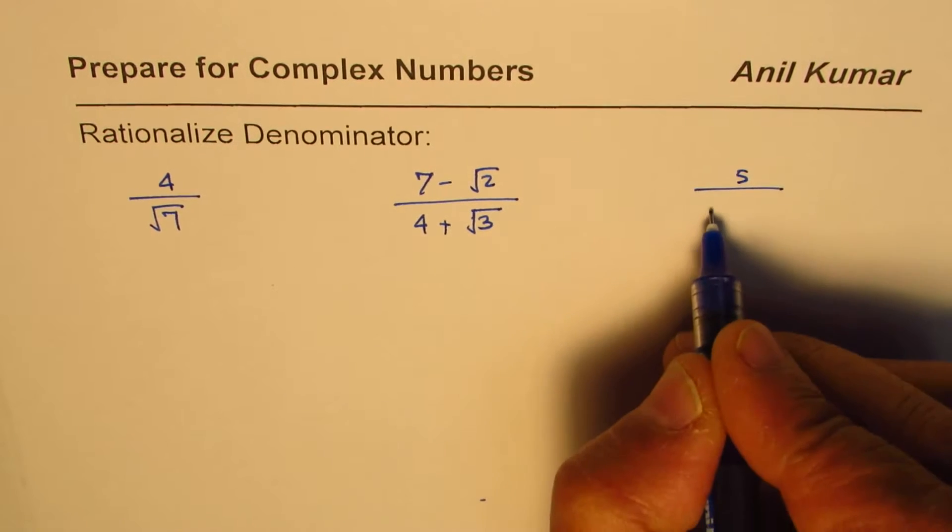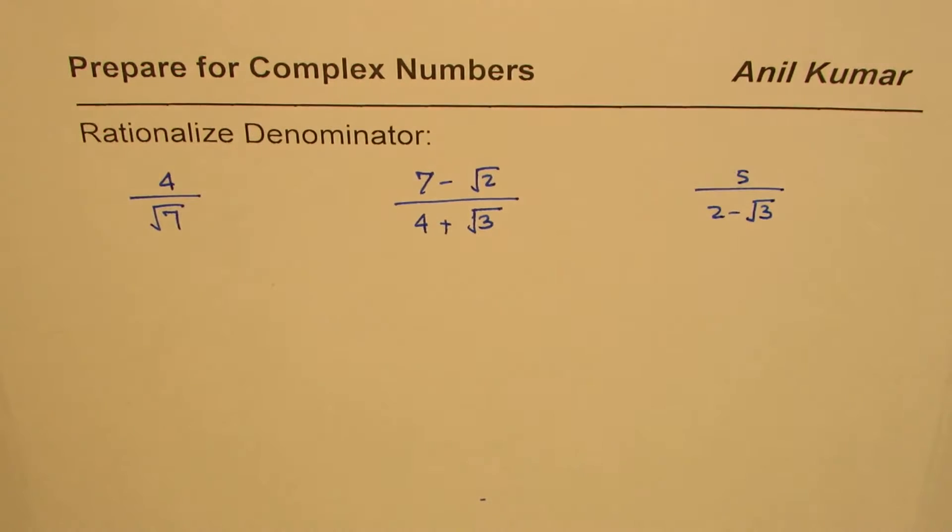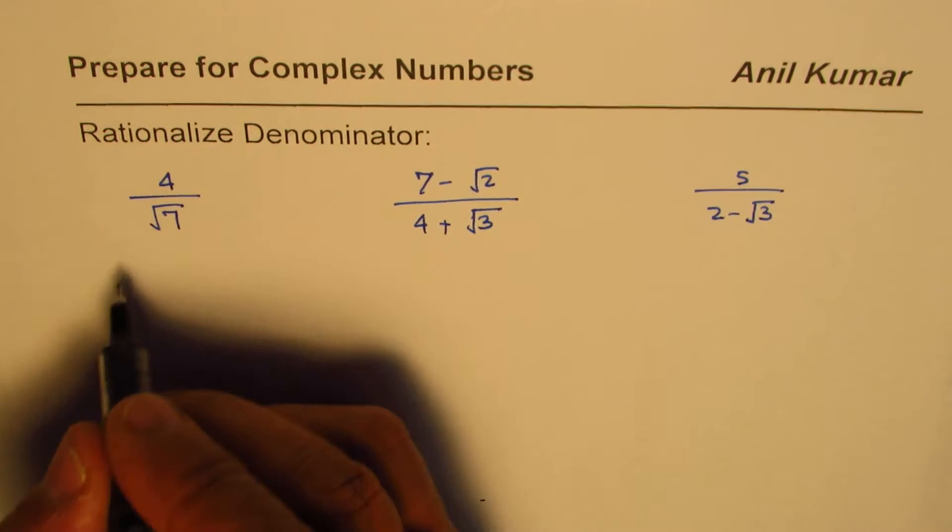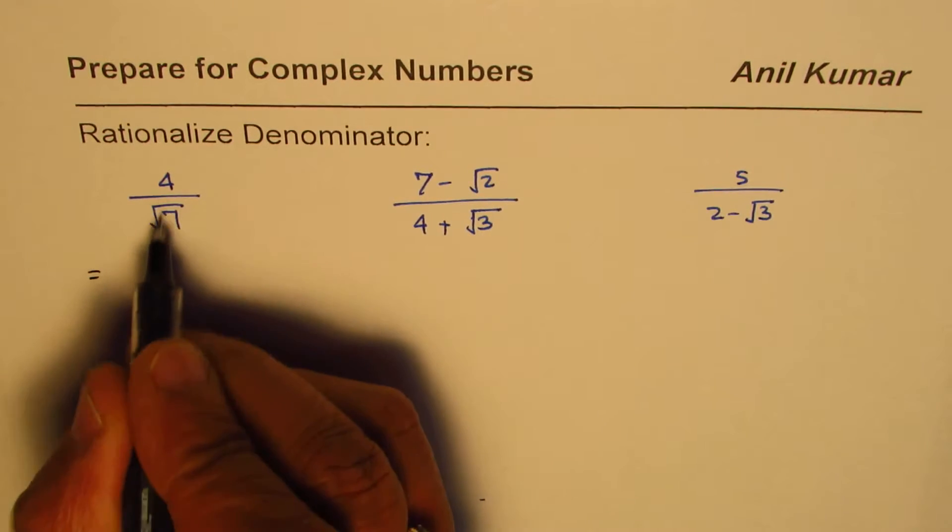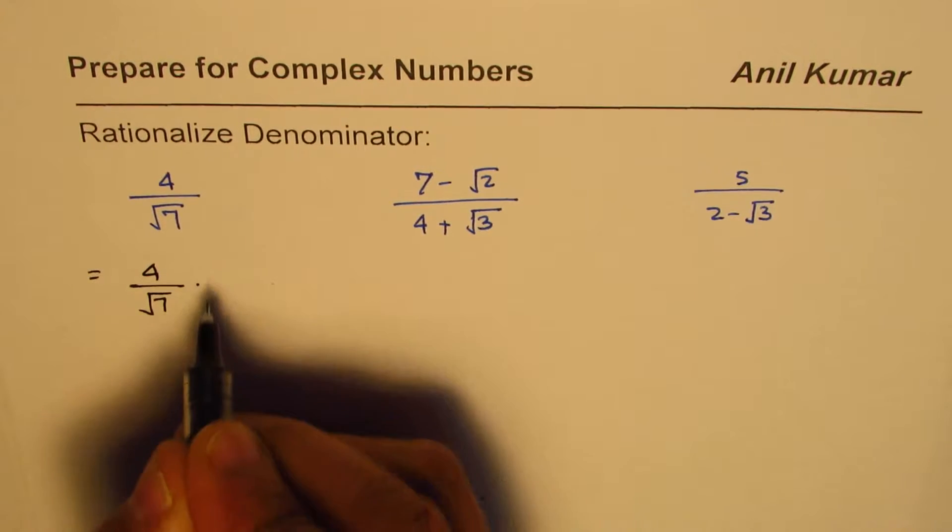How do we rationalize this? So these three examples will cover most of the types of things which we do for rationalizing denominators. In the first case, when we have 4 over square root of 7, we could just multiply and divide by square root of 7, so that helps us to get rid of square root from the denominator.